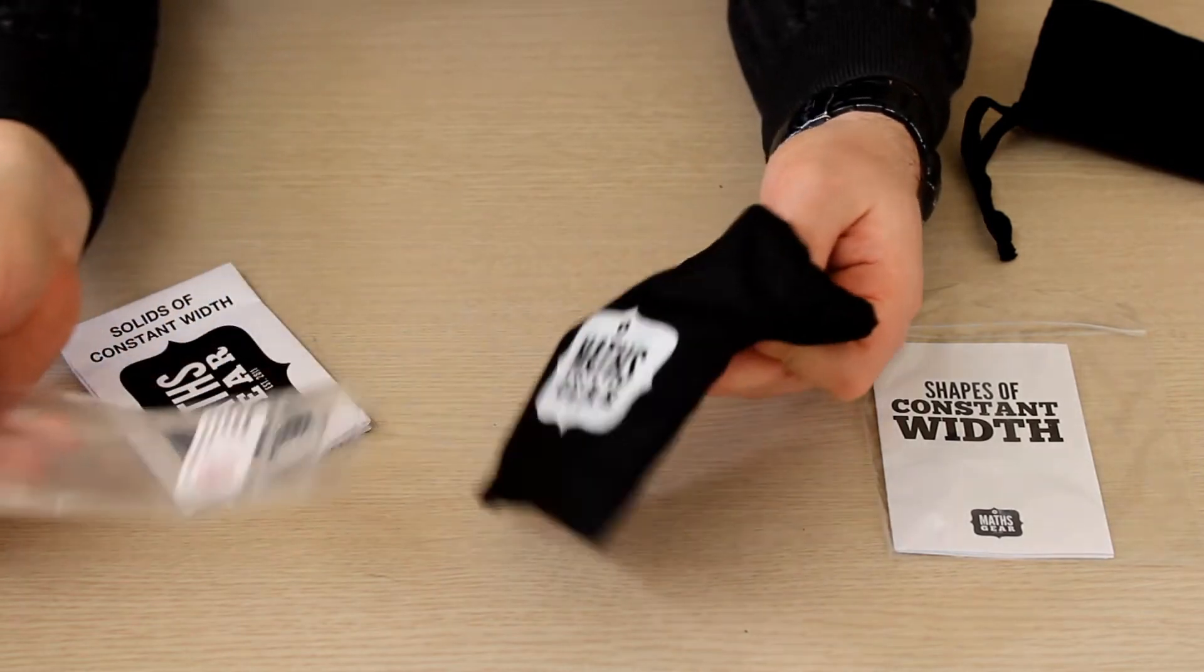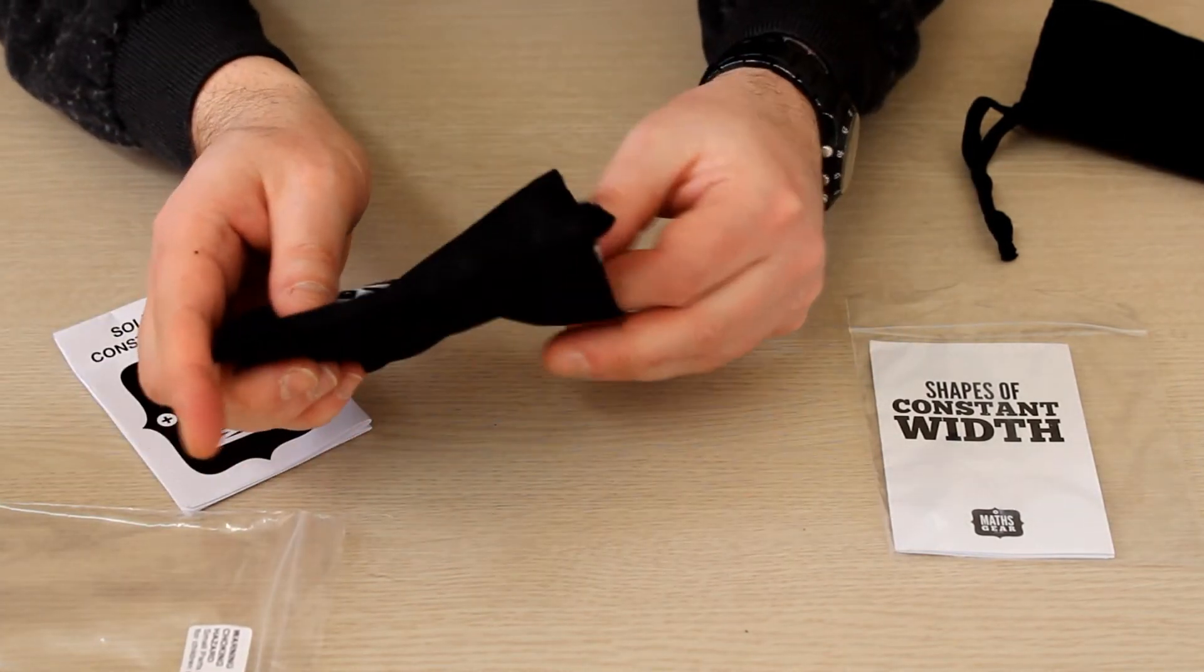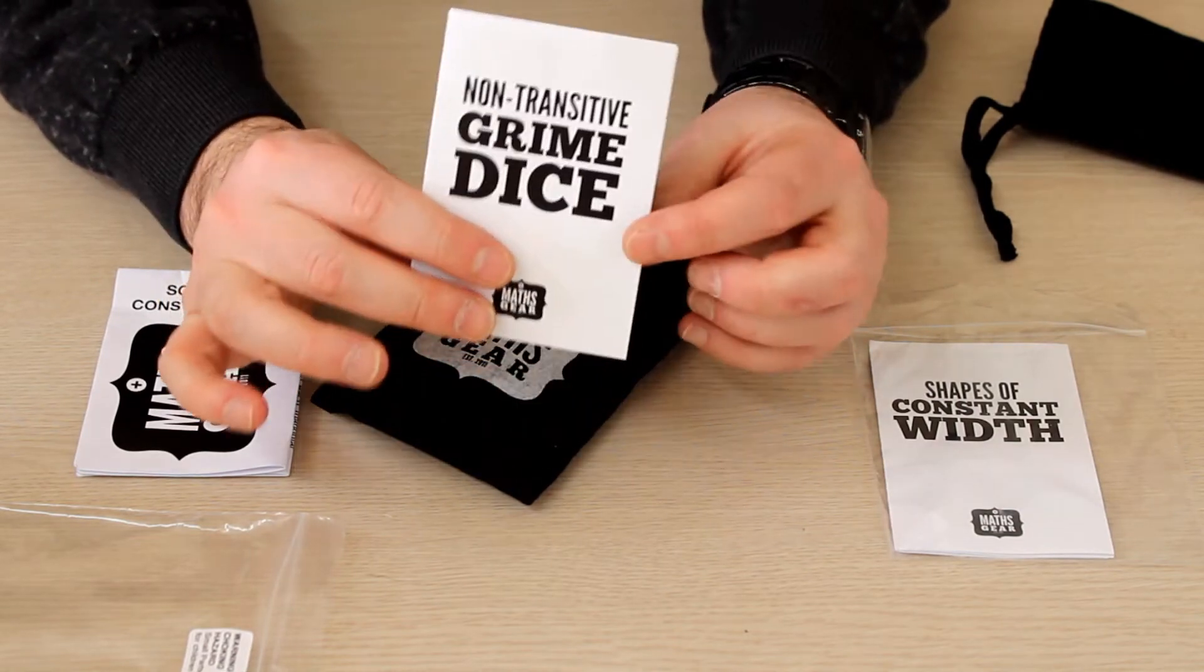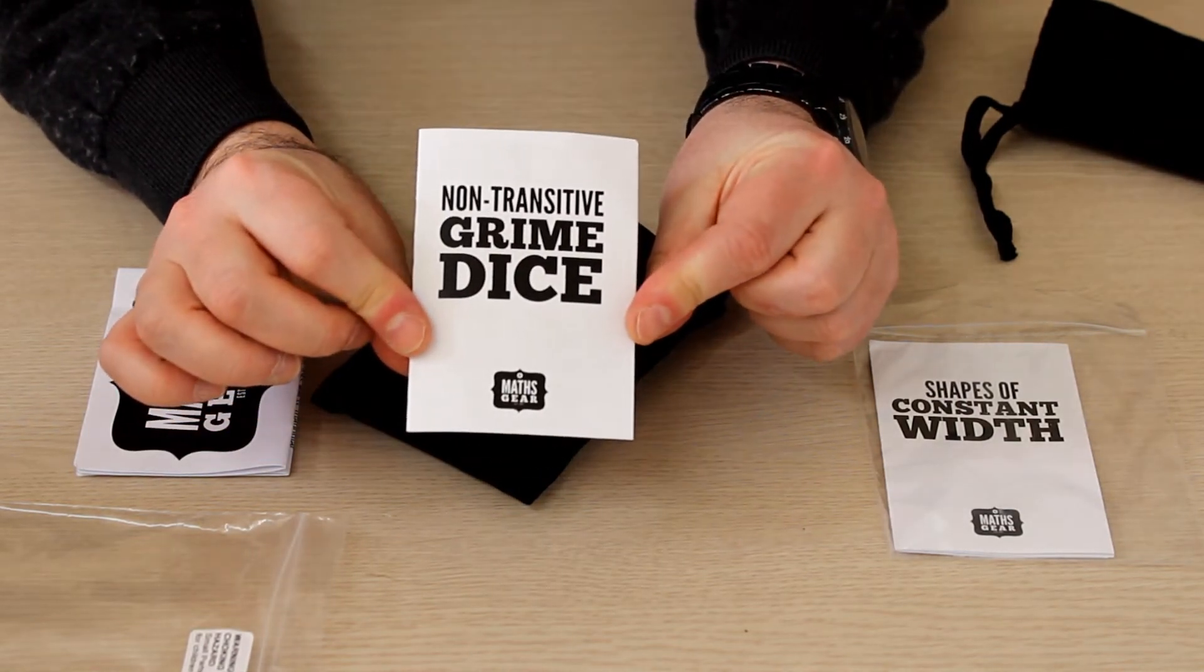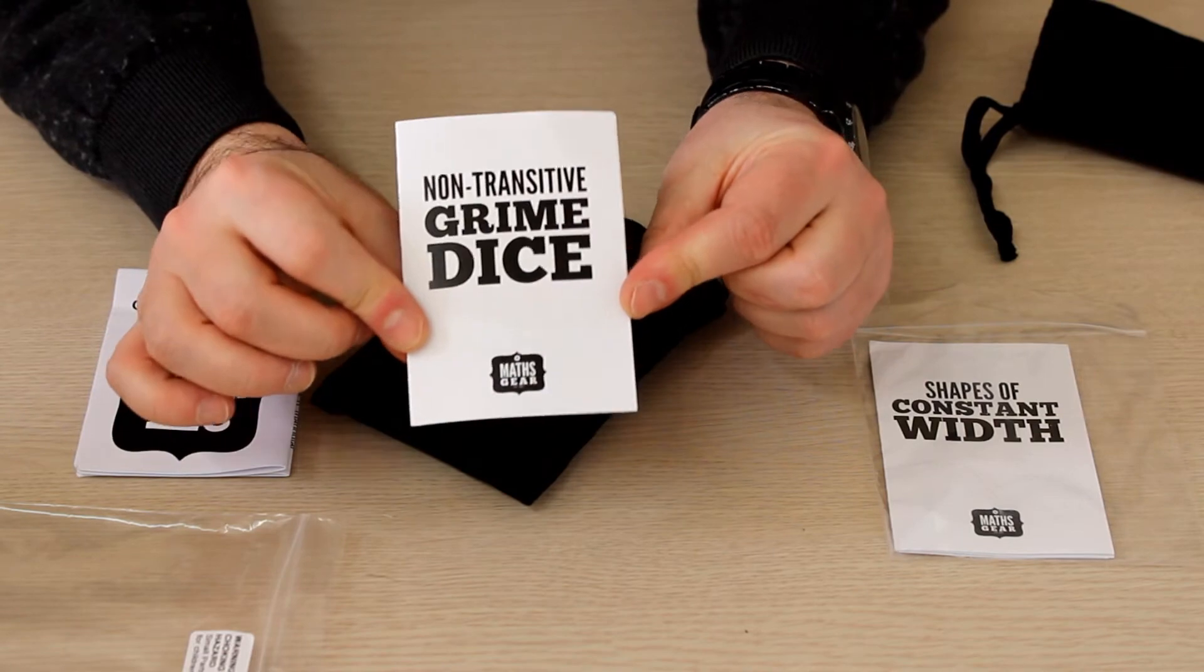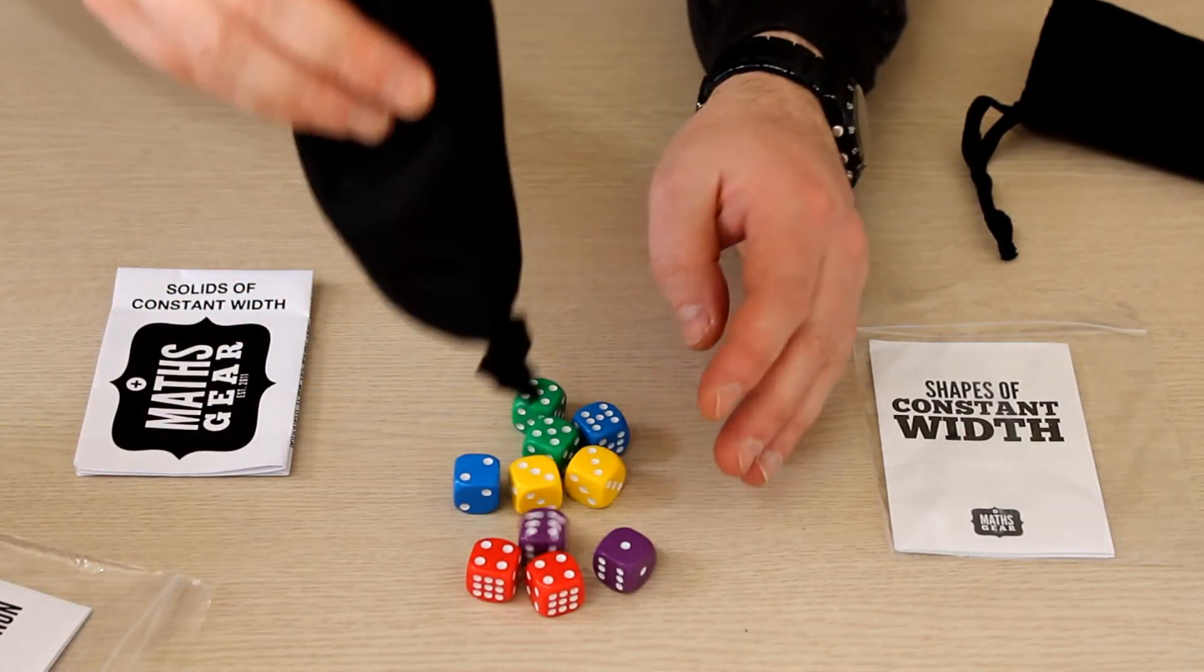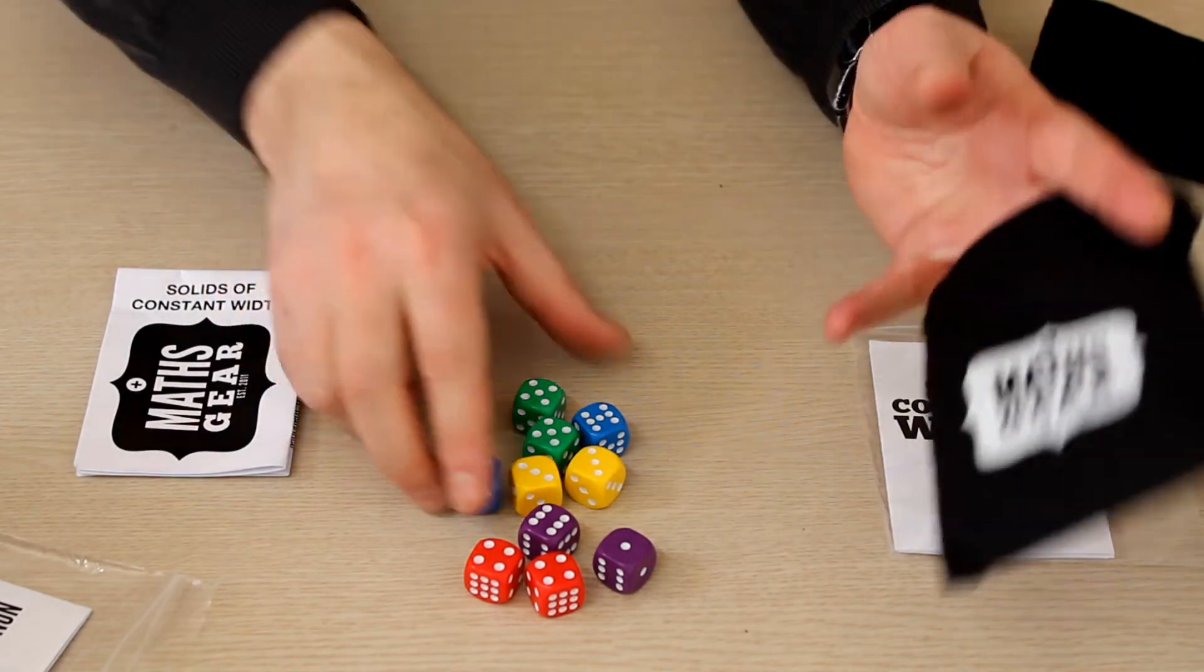So let's check this out. Again, a nice pouch from Math Gear. And these are the non-transitive Grime dice. And those are really, really cool. I'm gonna use them. Oh yeah, they are two of each, five different colors.